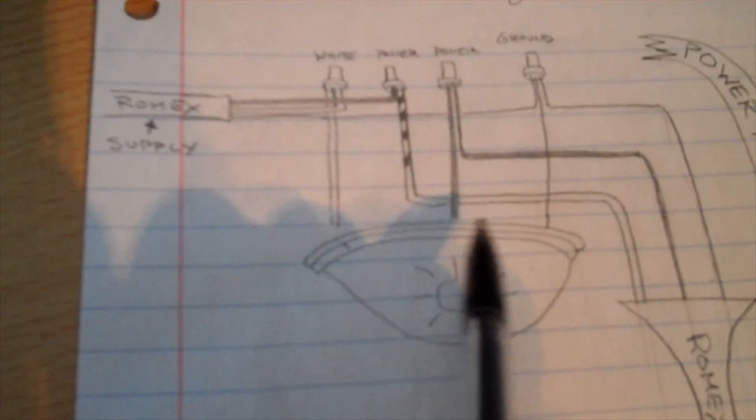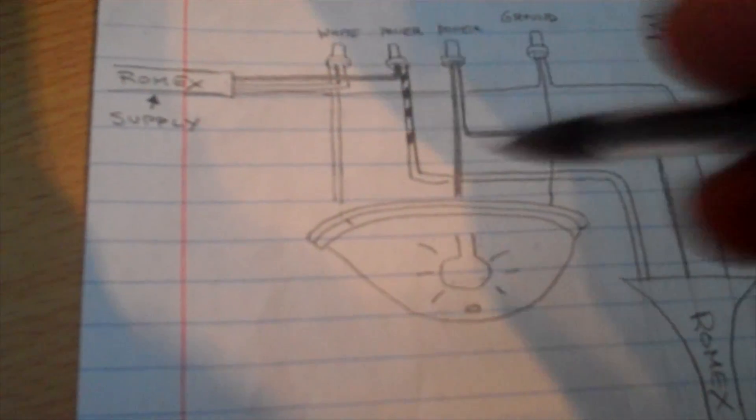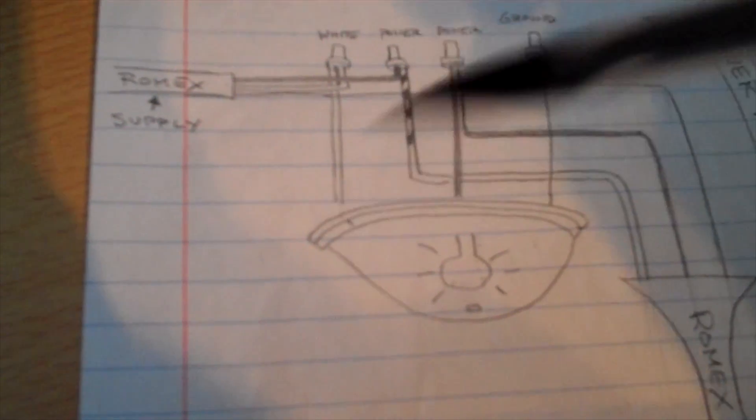Alright, so this is how it works. This is your power that's coming in and this is your existing light. So this is your drawstring light. You're going to disconnect the power from the light. You're going to start completely over.